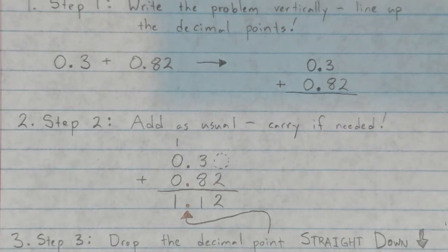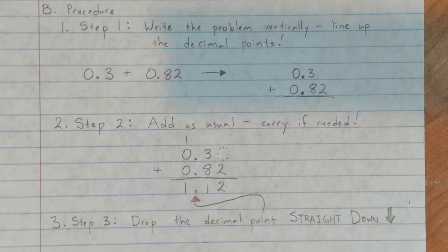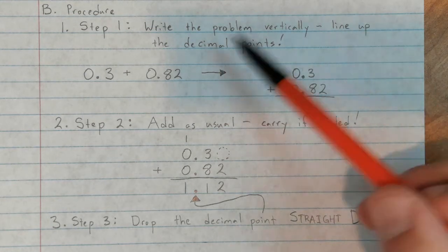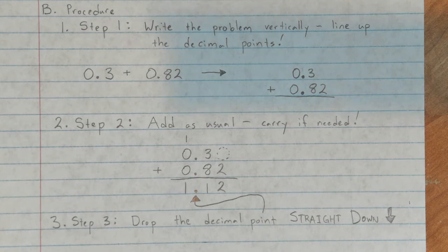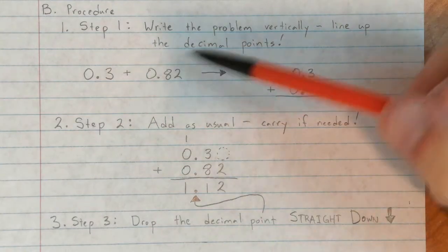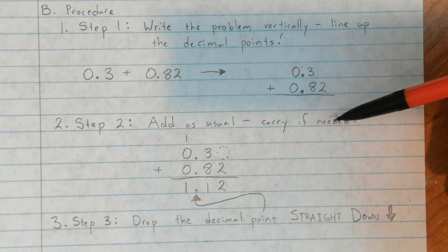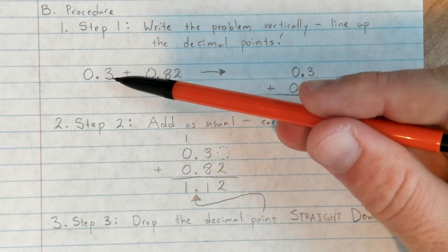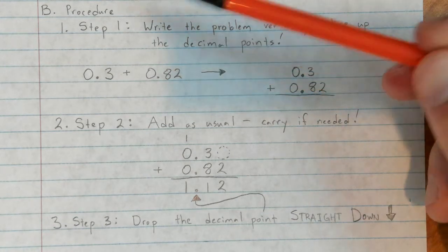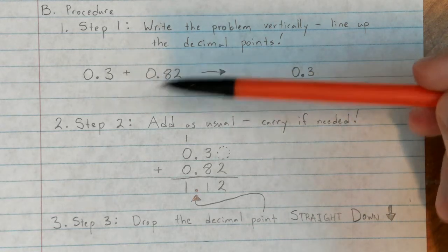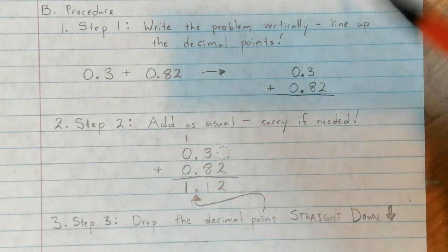That three-step process is pretty much it. The standard algorithm is the same thing you've always done — the big change is just lining up the decimal points. If you do not line up the decimal points, your answer will be wrong. If I had lined these up on the right-hand side, I'd get 0.83, which is way too small — I'd be combining tenths with hundredths. Line up the decimals.